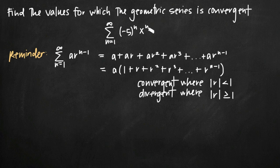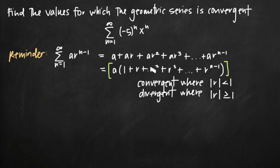We wouldn't necessarily know this was a geometric series unless told. So in order to prove first that it is a geometric series, we want to write out the first couple of terms so that we can confirm it is in the form a times the quantity 1 plus r plus r squared plus r cubed, where r is that constant multiple.